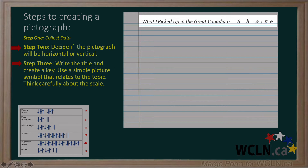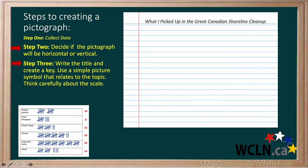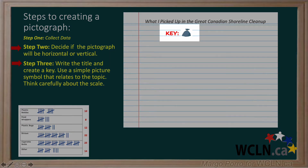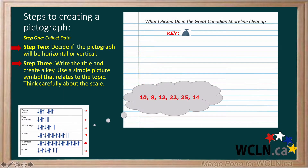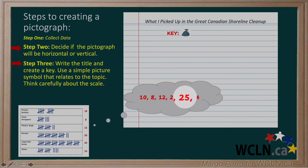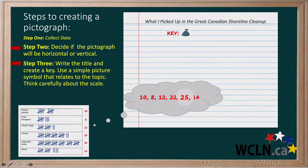Holly chose a simple title that tells what the pictograph is about: 'What I picked up in the Great Canadian Shoreline Cleanup.' Holly chose a simple trash bag that she could very easily draw for her key. Her scale needs to be chosen carefully. Holly has to think carefully about her numbers to decide what each trash bag will represent. Holly's largest number is 25, so her scale can use a fairly small number. If she had higher numbers, like 80 or 100 or even more,